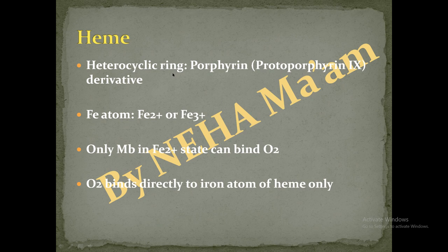The heme group is a heterocyclic ring called a porphyrin ring, or more specifically a porphyrin derivative called protoporphyrin-9. The heme group contains an iron atom that can be present in two oxidation states: Fe2+ or Fe3+. In myoglobin, the Fe2+ state binds to oxygen, while Fe3+ cannot bind to oxygen. The binding of oxygen is directly from the iron atom of the heme group.